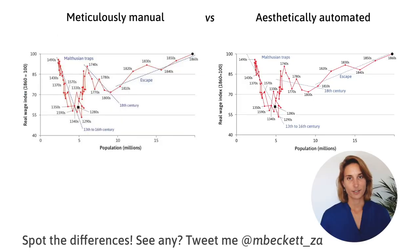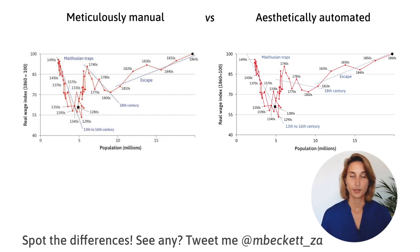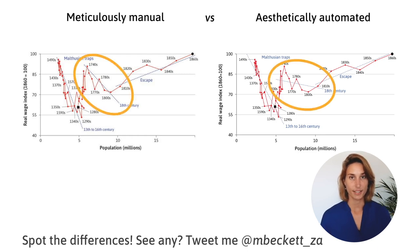Here is a second example. What I want to point out here are some deliberate differences. You might have noticed this in the previous graph as well, but there are some dotted blue lines that show the trends for different time periods. When I calculated these trends from the data and plotted them on the graph, I noticed a stark difference, particularly for the 18th century, as indicated here.